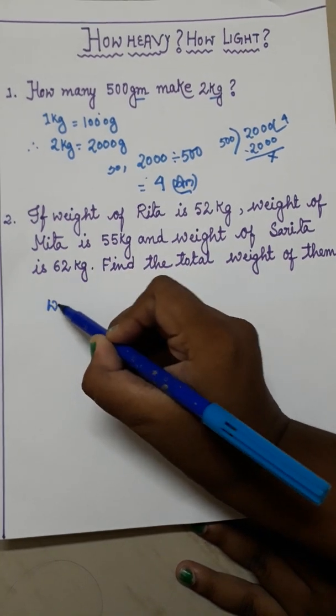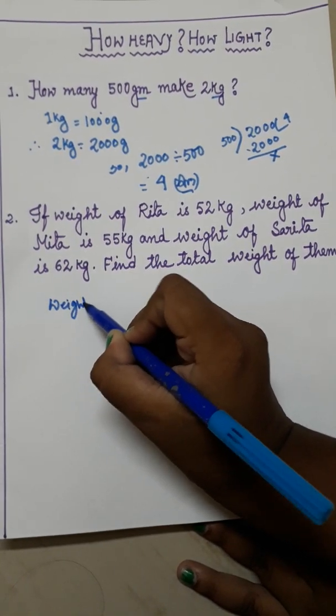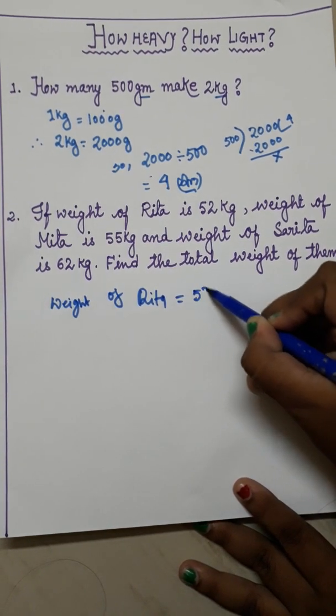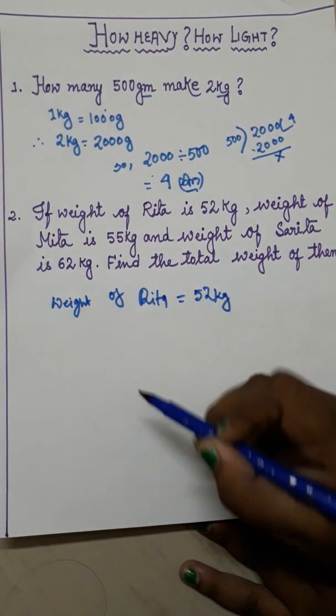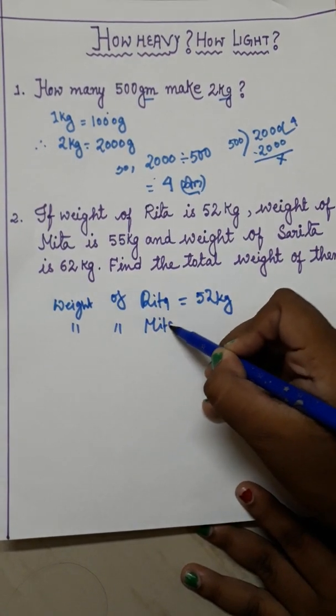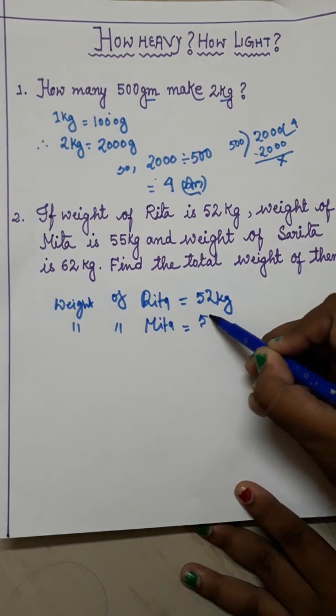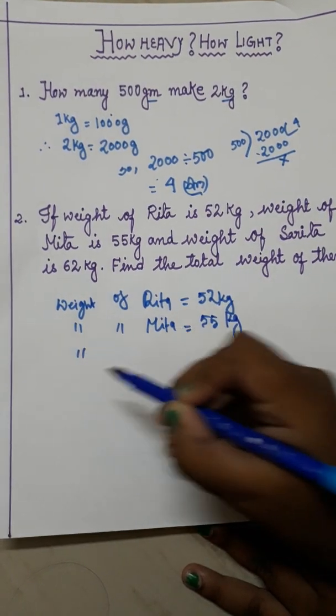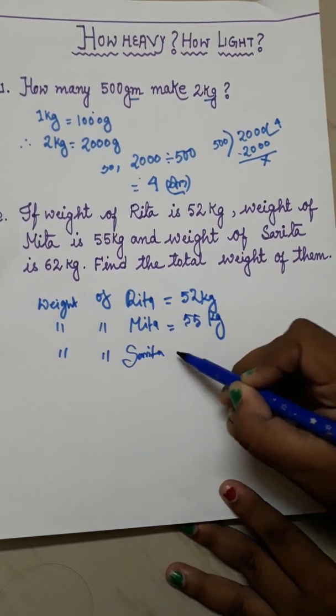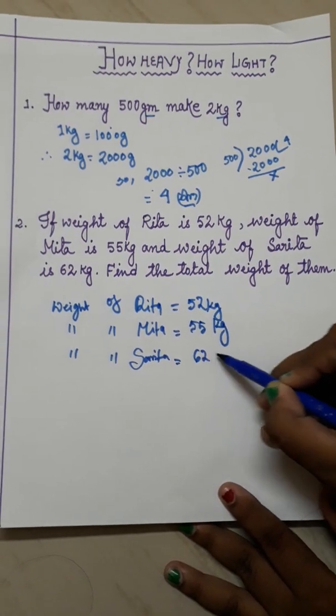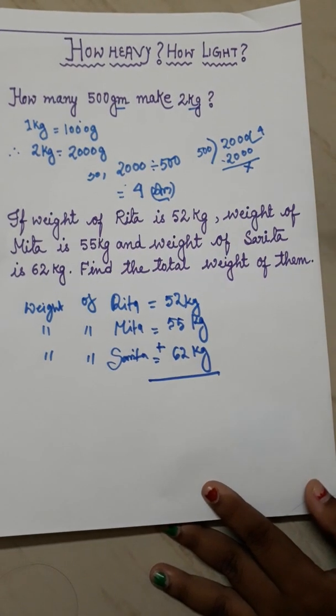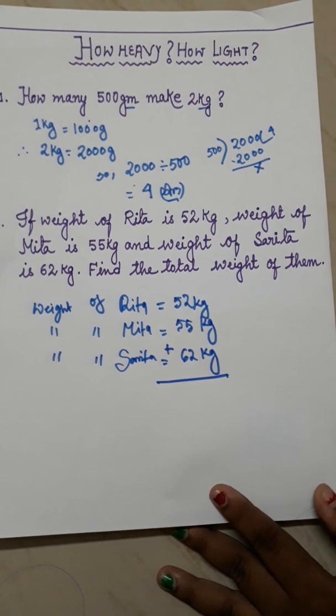At first we will write weight of Rita equals to 52 kg. In the next line we will write weight of Mita equals to 55 kg. In the next line we will write weight of Sarita equals to 62 kg and then we have to do addition. I know you can easily do addition.